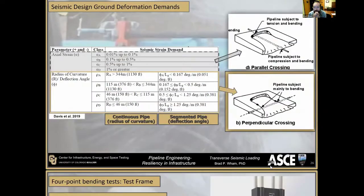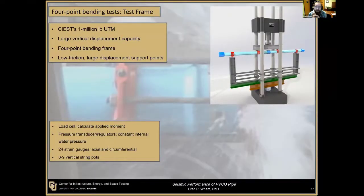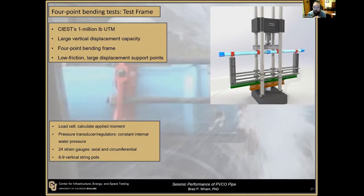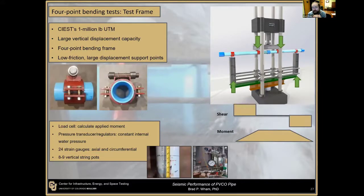Here at CU Boulder, at the Center for Infrastructure, Energy, and Space Testing, we have a number of different pieces of equipment to apply large loads to different types of structures. One is our million-pound uniaxial testing machine, which can apply very large loads and vertical displacements for four-point bending. The intention of this test is a four-point bending setup with a constant moment region at the center of the pipe, looking at the coupling — where we think is probably the most vulnerable point.